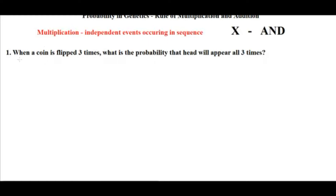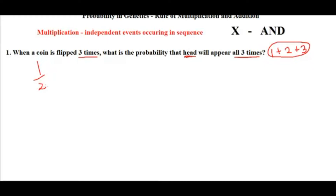Let's begin with a very basic problem: when a coin is flipped three times, what is the probability that head will appear all three times? First time we need head, and second time we need head, and third time also we are expecting head to appear. The probability of head appearing when you flip a coin is one by two, because there are only two possibilities — head and tail.